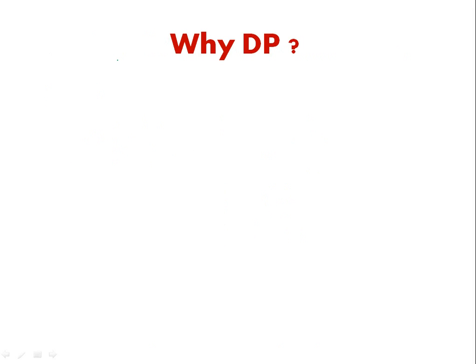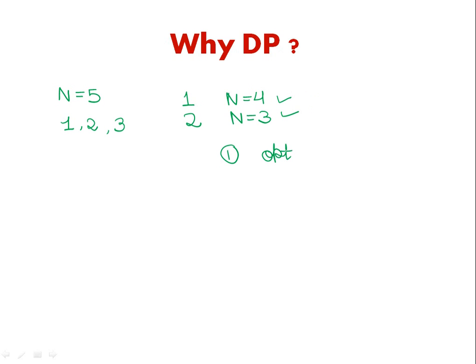If you have seen the first video of this series, you'll realize this problem can be solved by dynamic programming. Consider the same example: n equals 5, coins 1, 2, and 3. If I pick 1, the problem reduces to n equals 4. If I pick 2, it reduces to n equals 3. If I can find solutions to these sub-problems, I can find the answer to the original problem. So this problem has the optimal substructure property.